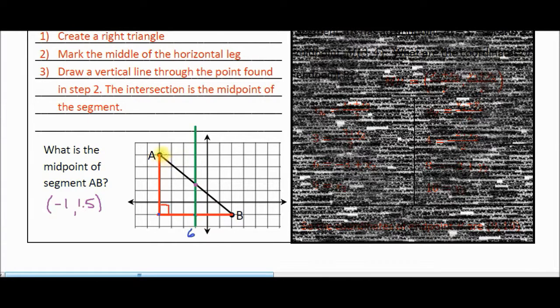Now, again, if you want to just check this theory out, if you find the coordinates for A and the coordinates for B and use either the midpoint formula or the midpoint shortcut, you're going to get this exact same answer. The midpoint will be at negative one comma 1.5.